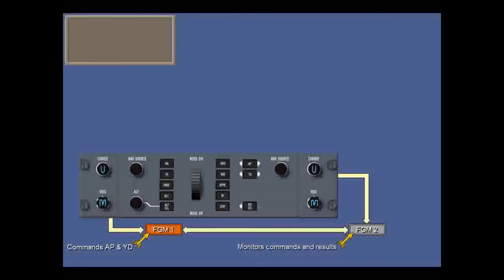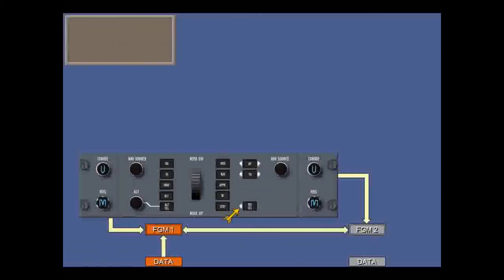Module two monitors the commands and the performance of the actuators, checking for mismatches. The HSI selector white arrow light points to the side that is inputting data to the flight guidance module in control — this is usually the flying pilot side. The data includes the VOR or FMS nav source selected with these knobs.